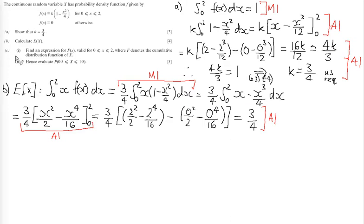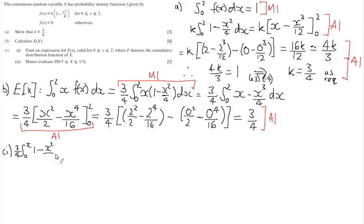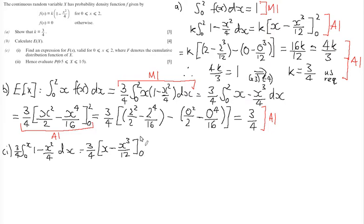Part C(i) asks us to find an expression for F(x), the cumulative distribution function, valid for x between 0 and 2. To find the CDF, we integrate the PDF from 0 to x: three quarters times the integral of (1 minus t squared over 4) dt. We've already seen that 1 integrates to x and x squared over 4 integrates to x cubed over 12 — we're recycling what we did in Part A.